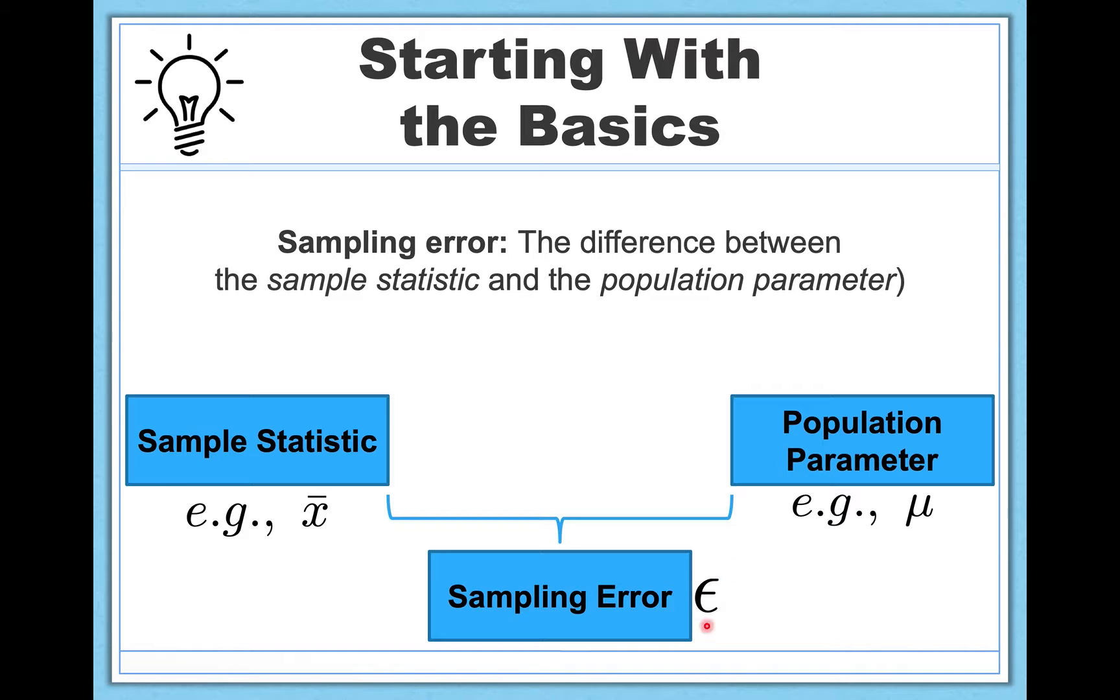We basically show sampling error as its own little symbol here, which is called epsilon. You're going to see that several times in this video, and you'll probably see it more in the future too, because it's an important concept.